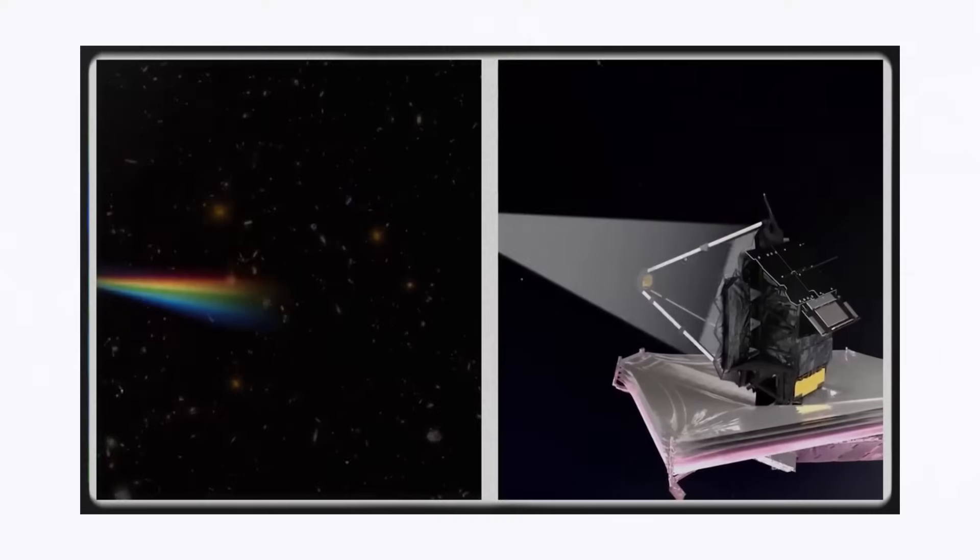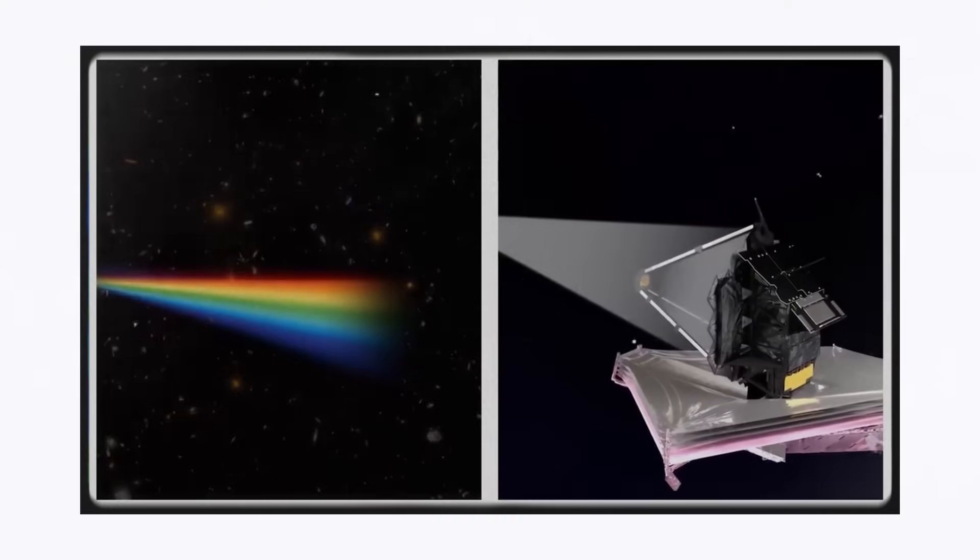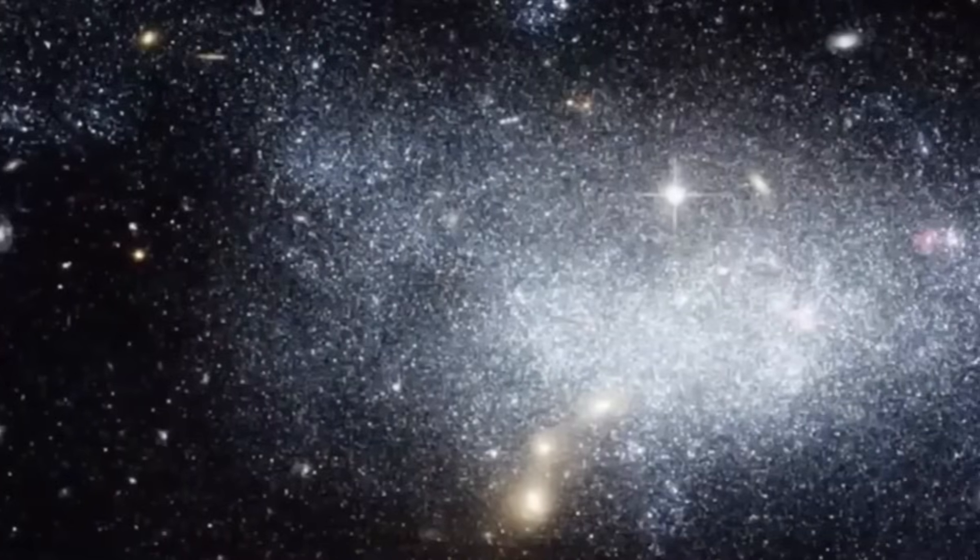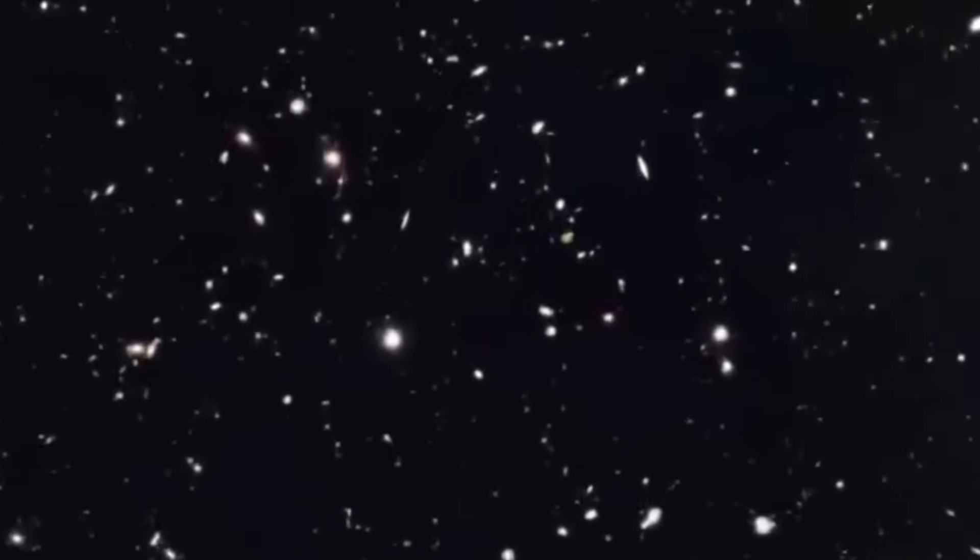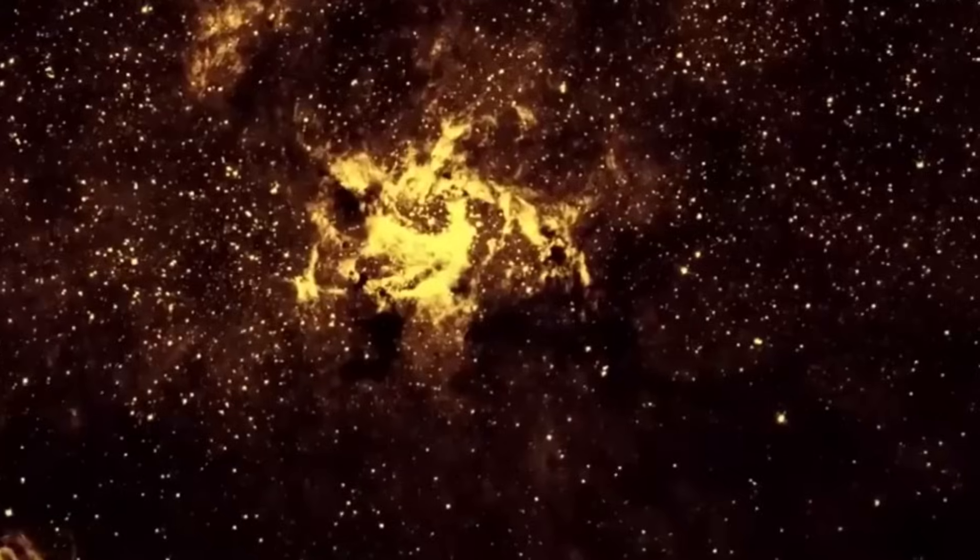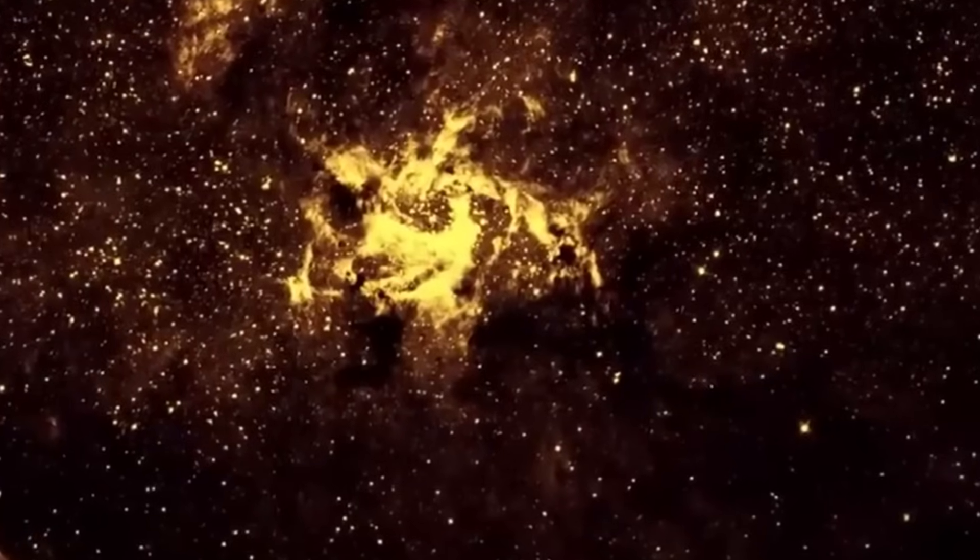But that's not all. Scientists also found something mind-boggling. These galaxies are as mature as our 13-billion-year-old Milky Way galaxy. The mass of stars within each of these objects total several billion times larger than that of our sun, according to the research. One of them in particular might be as much as 100 billion times our sun's mass. For comparison, the Milky Way contains a mass of stars equivalent to roughly 60 billion suns. The discovery of these galaxies helps us estimate the age of the universe to be around 13.8 billion years, which proves our previous models of the universe wrong.